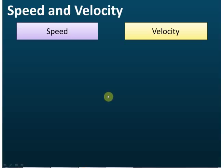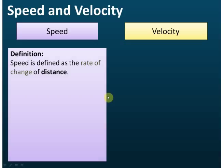The next things we need to know are speed and velocity, and the difference between these two. First, let's see the definitions. Speed, by definition, is the rate of change of distance. In physics and also in chemistry, when we talk about rate, it means how fast a change occurs. So rate of change of distance means how fast the distance changes.